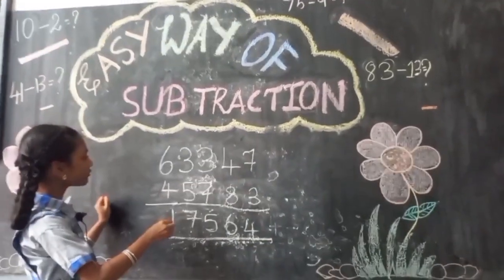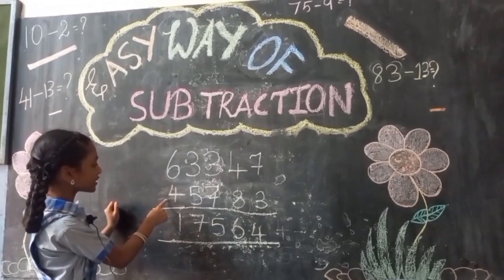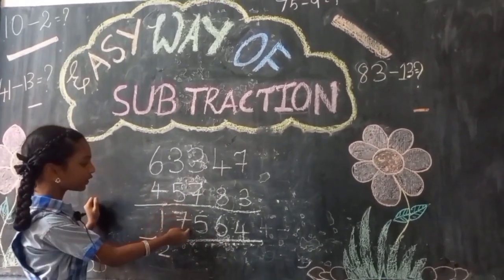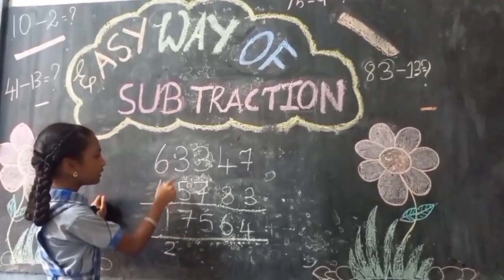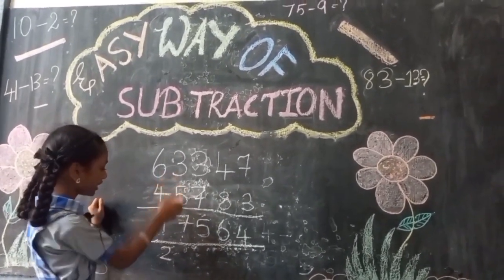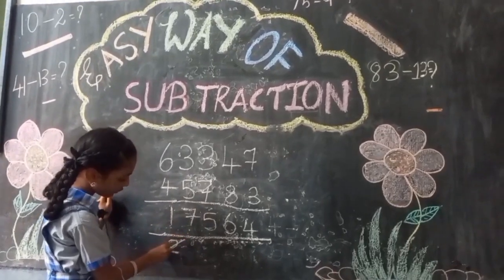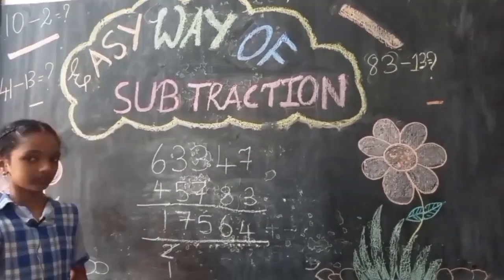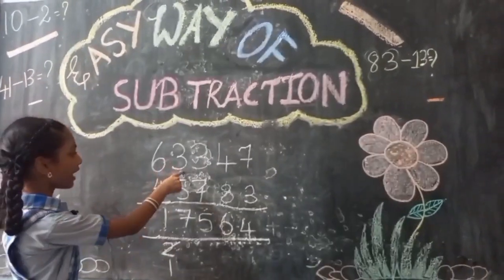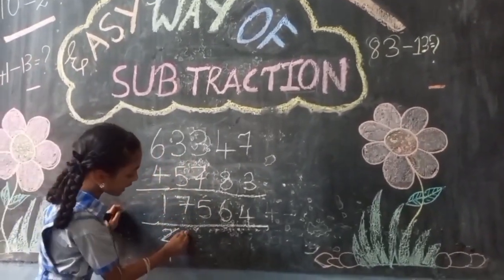Take the numbers in the first column: 6 minus 4 is 2. Now in the second column, we have 3 minus 5. We cannot subtract 5 from 3, so reduce 1 from 2. Complement of 5 is 5. Then add 5 to 3, which is 8.